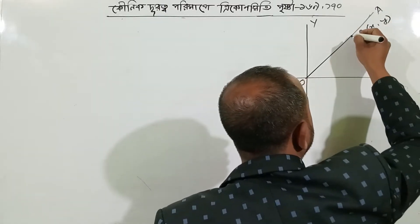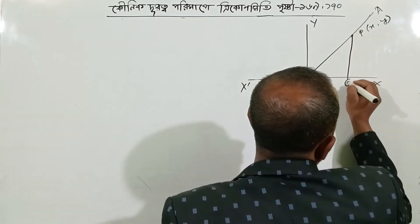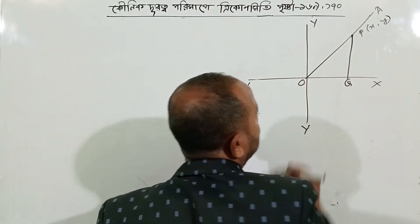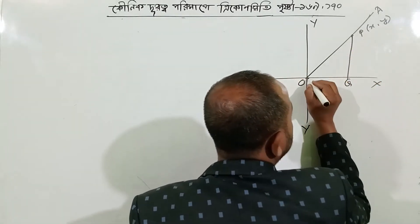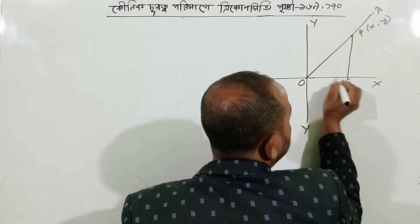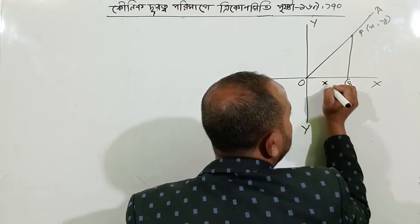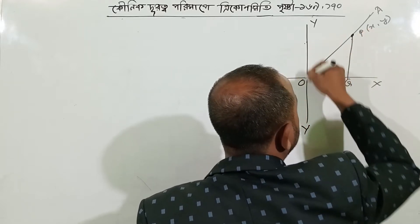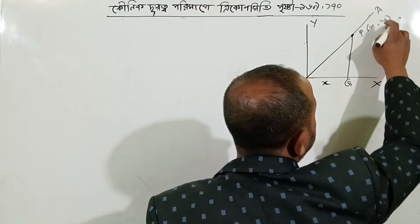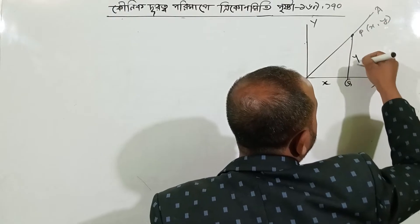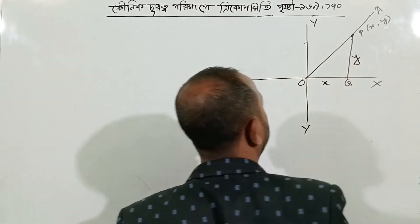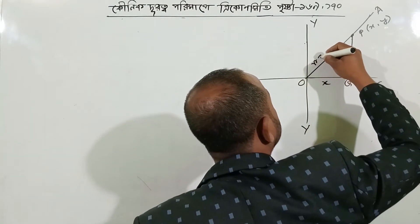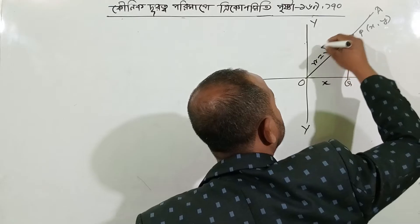Then xy and xy, then xy is equal to x. So, x is equal to x, and x is equal to x. So, here we have y. We have r to draw the r. If r is equal to 0, then r is equal to 0.